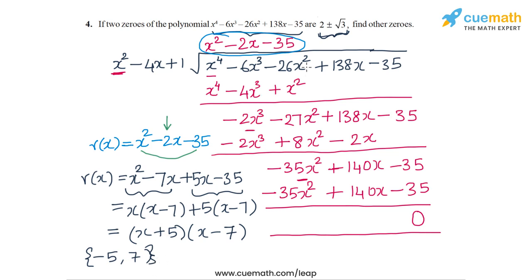So the four zeros of P(x) are: 2 plus or minus root 3, which were the two zeros already given, and the remaining two zeros of P(x) are minus 5 and 7. With that, we complete question number 4.